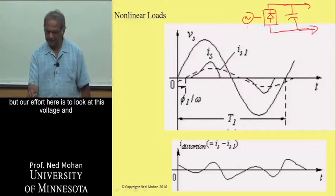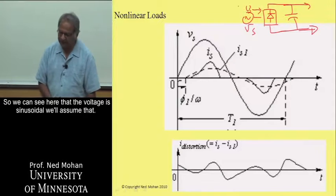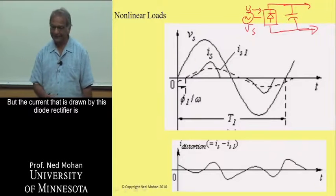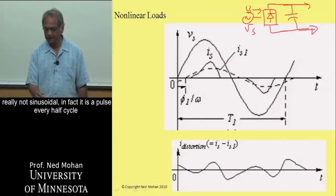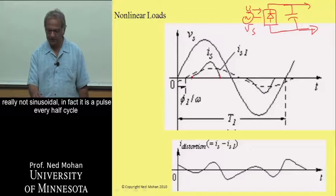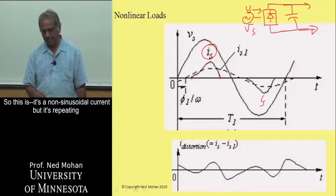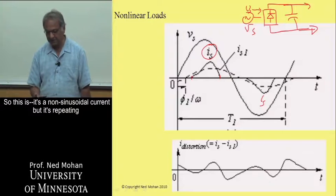But our effort here is to look at this voltage and this current here. So we can see here that the voltage is sinusoidal. We'll assume that. But the current that is drawn by this diode rectifier is really not sinusoidal. In fact, it is a pulse every half cycle, as shown here and as shown over here.